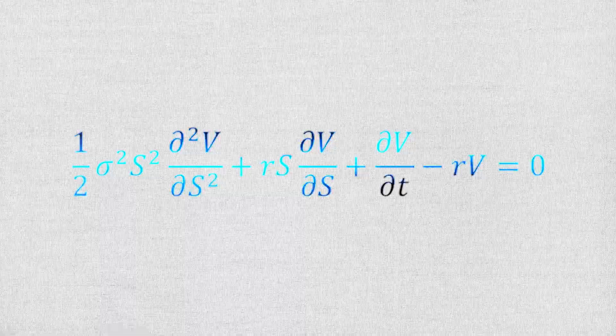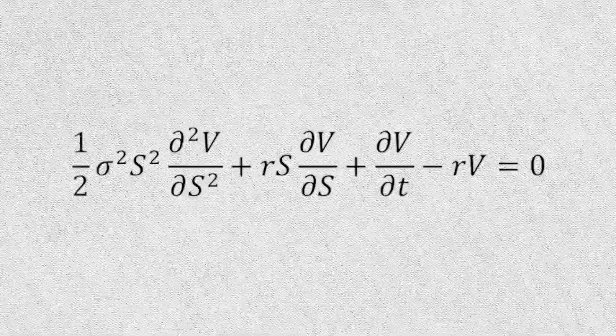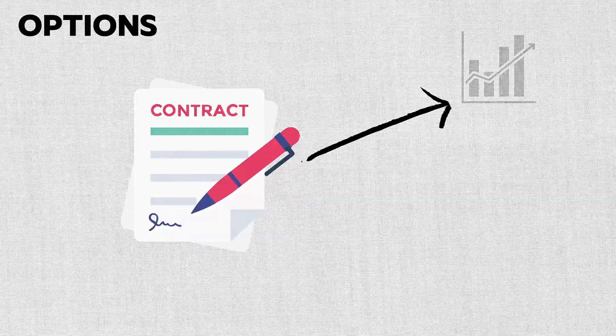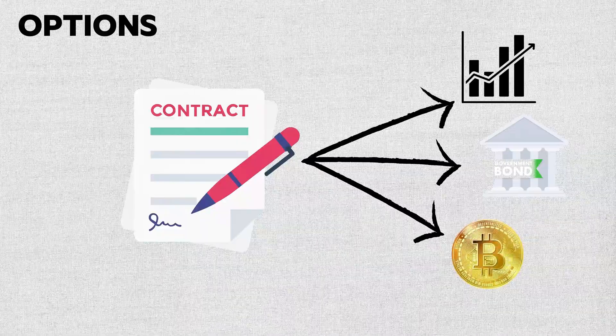But before we dive into what makes this equation so special, let's first understand what options are all about. Options are a type of contract where their value comes from an underlying asset like stocks, bonds, currencies, or commodities.